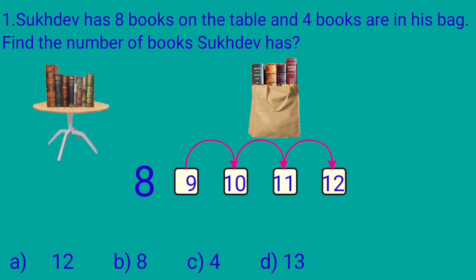So 8 books and 4 more books are now total 12 books. 8 plus 4 is equal to 12. Now Sukhdev has 12 books. So we will put a tick mark at option A.